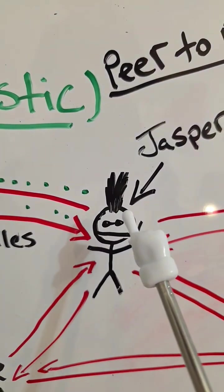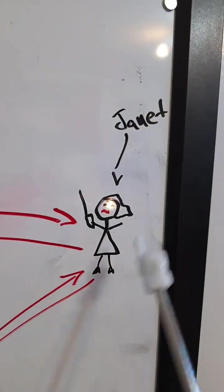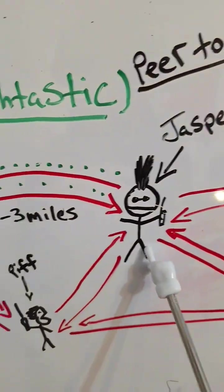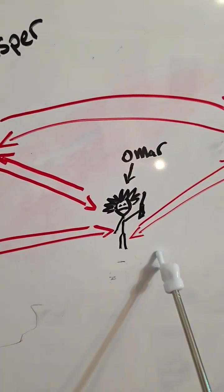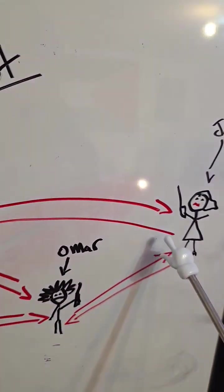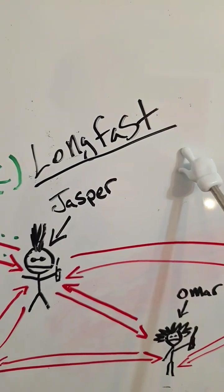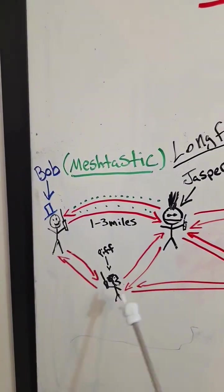Bob sends a message out and it gets to Jasper. It bounces off Jasper and gets to Janet. But the same message that got to Jasper also got to Piff. And that same message from Jasper and Piff went to Omar, which eventually went back to Janet. Typically when this happens, it happens on a specific channel called LongFast, which is essentially a giant group chat.